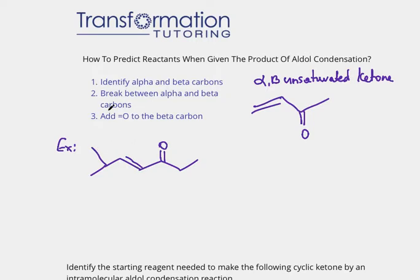To go back and predict the reactants, it is pretty easy. Here I outline the steps. First, we have to identify alpha and beta carbons. The alpha carbon is the carbon that is next to the double bond=O. The beta carbon is one carbon away from the double bond=O.